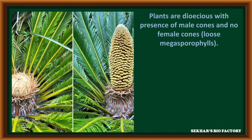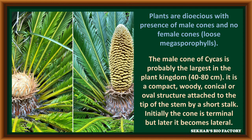The Cycas plant is generally dioecious in nature, having male and female cones separately on two different plants. However, the megasporophylls are loosely arranged so they never form a true female cone. The male cone of Cycas is the largest in the plant kingdom, having 40 to 80 cm in size, and it is compact, woody, and conical or oval in structure.